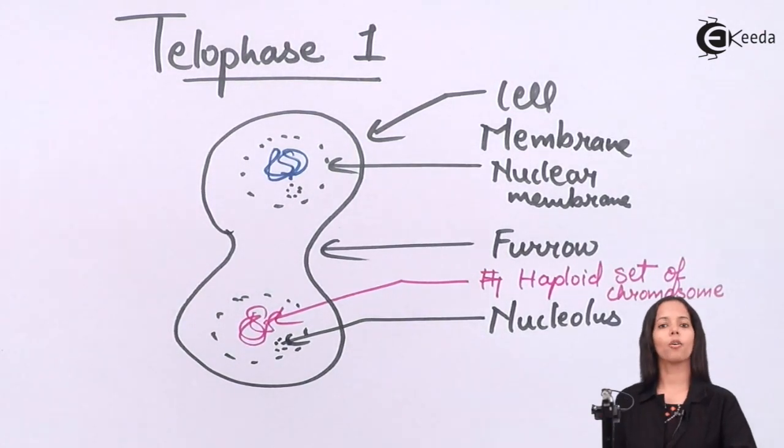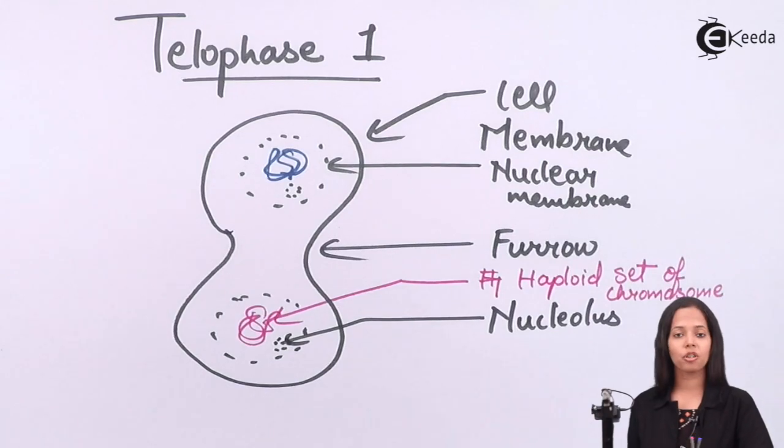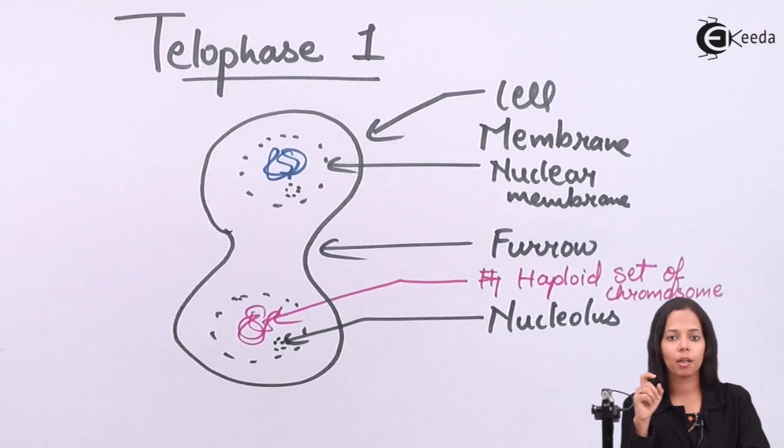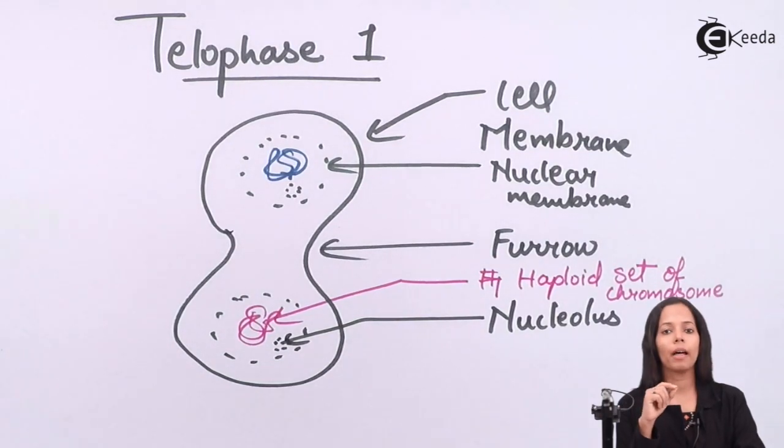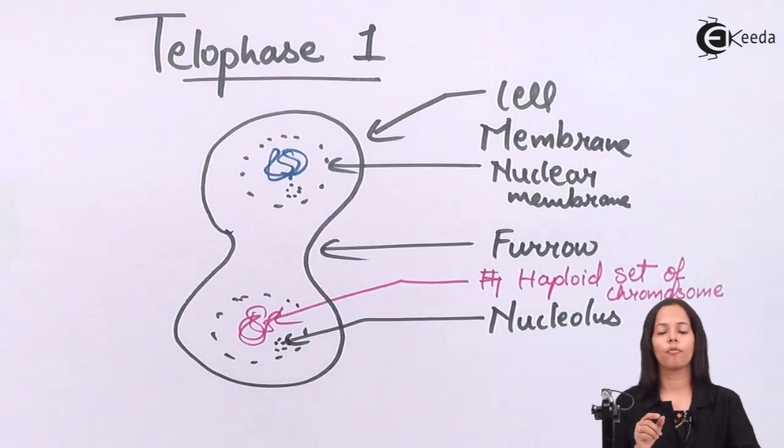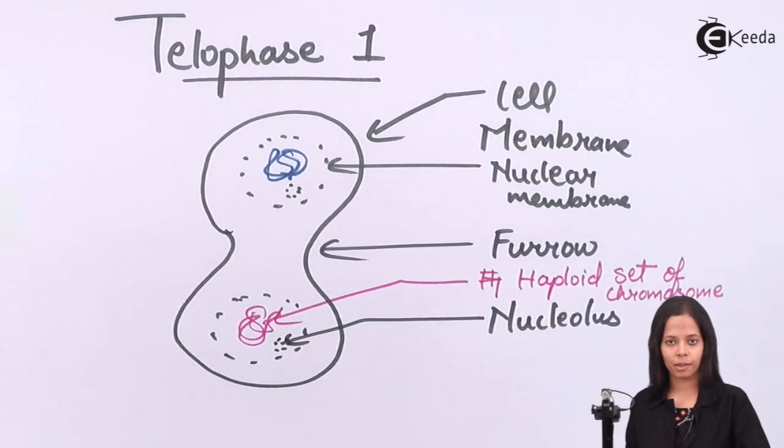This is how telophase one looks. You have seen the constriction between the cytoplasm started getting formed, and that constriction from both sides forms a structure called furrow. Now one more thing you can see, unlike prophase...